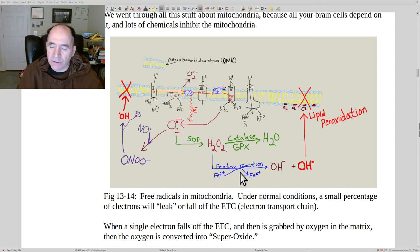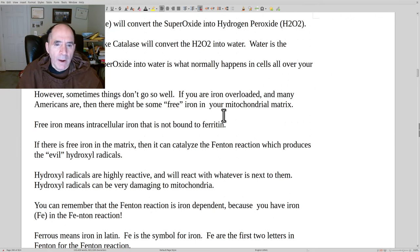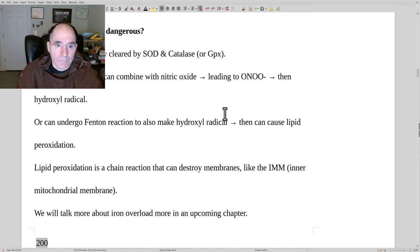If there's iron overload, you can run something called the Fenton reaction. It can lead to production of hydroxyl radicals which are quite toxic to the inner mitochondrial membrane because they can undergo lipid peroxidation, which can severely damage inner mitochondrial membrane. That's another reason why you don't want to be iron overloaded because it increases your risk of generating these types of lipid peroxidation reactions that'll trash your mitochondria. Superoxide anion is a free radical and also called a reactive oxygen species.